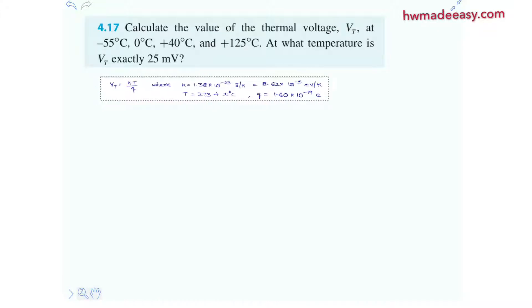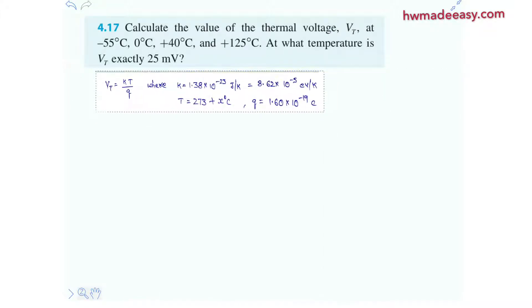So we know actually the thermal voltage Vt is Kt over Q. K is nothing but Boltzmann constant which is equals to 8.62 multiplied with 10 to the power of minus 5 electron volt per degree Kelvin and T here it is given in centigrade but we need to take it in Kelvin.